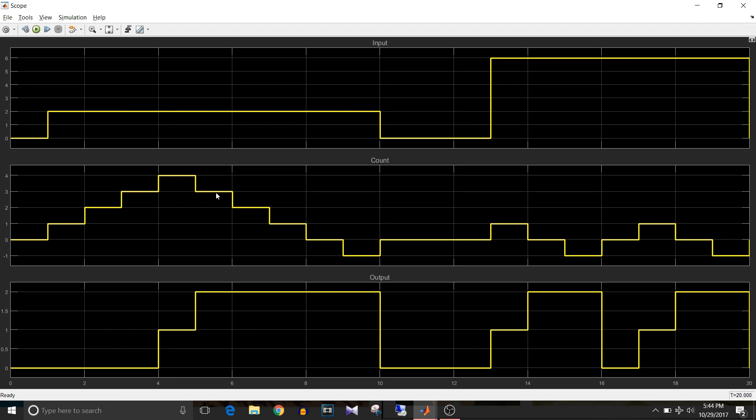Then after that, the count starts decrementing and once the count is less than 0, that is minus 1, it goes to default state and hence count becomes 0 and output equal to 0.